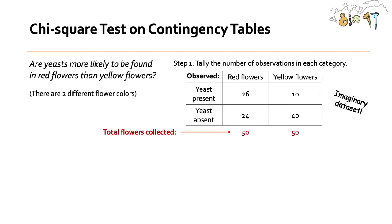So how are we going to do this? Well, we need to make observations of red and yellow flowers and if yeast were present or absent. So I created this imaginary data set. Well, I didn't create it. This data set was created by the gods that be in Bio 47, and the imaginary data set looks something like this.